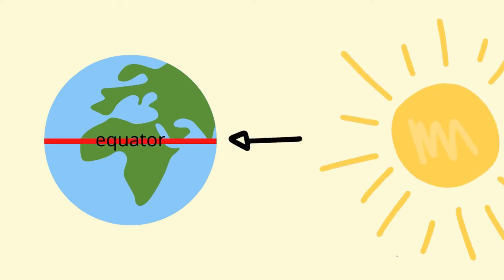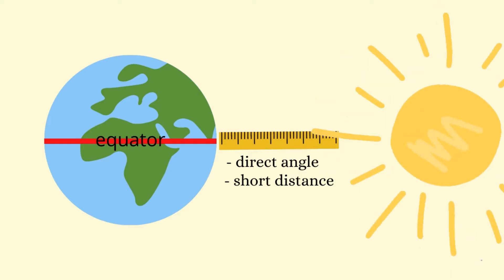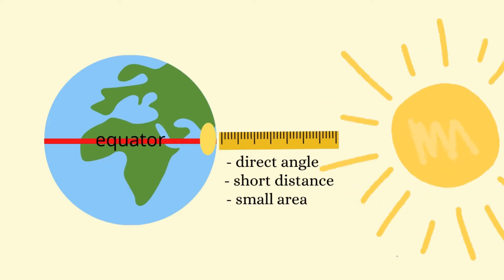Before we move on, let's recap how solar radiation impacts the heating of the atmosphere. The word insolation means incoming solar radiation, and this radiation from the Sun is going to hit our Earth and affect temperatures depending on the latitude. The insolation hitting the equatorial areas hits at a direct angle, covers a much shorter distance, and is concentrated over a much smaller area.